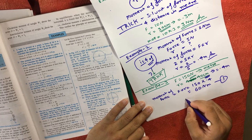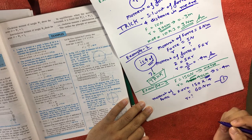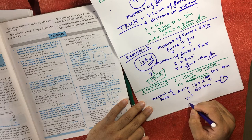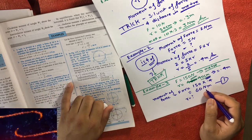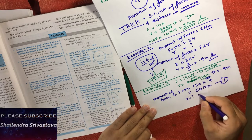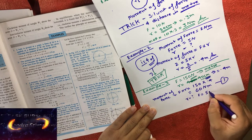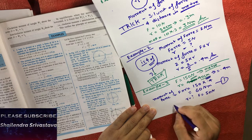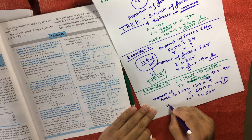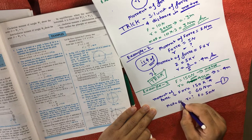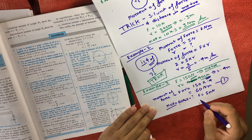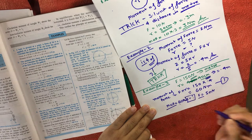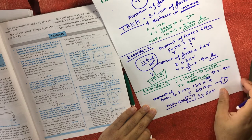Now for the second part: r, the length, is unknown — that's what we need to find. The force is given as 50 newton. We already know the moment of force is 60 newton meter from Equation 1. So we know the moment of force and the force; we just need to find the length.